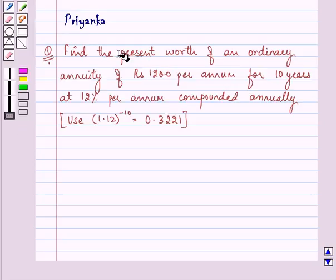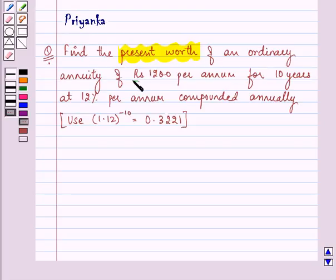It says find the present worth of an ordinary annuity of rupees 1200 per annum for 10 years at 12% per annum compounded annually. We need to use the value of 1.12 raised to the power minus 10 as 0.3221.